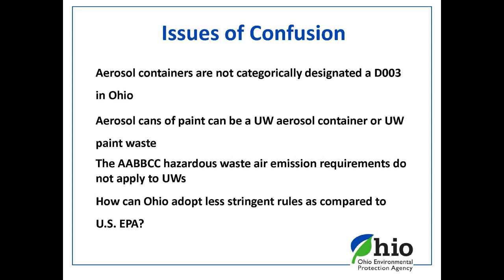How can Ohio adopt these less stringent rules as compared to U.S. EPA? In the 1990s, when EPA developed the base universal waste program, they also adopted two rules that put forth criteria and allowed a state to adopt their own state-specific universal waste rules. When Ohio became authorized for the base universal waste program, EPA said Ohio's rules are equivalent to the federal rules and operate in lieu of them. So when EPA comes into Ohio and inspects for the universal waste program, they use Ohio's rules and not the federal rules.